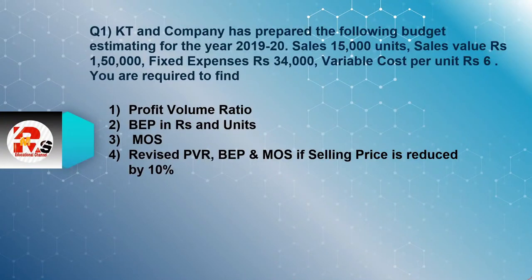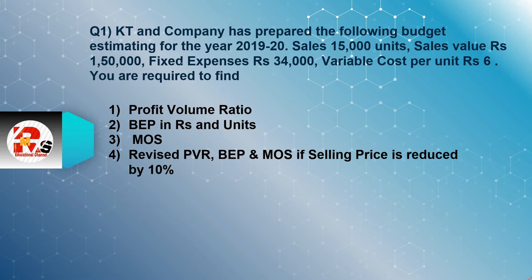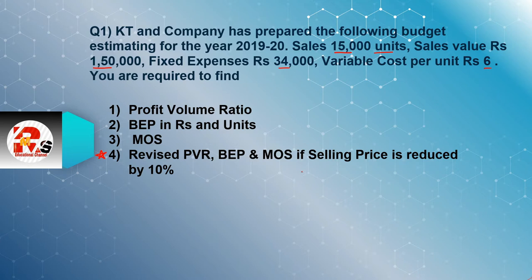Before reading the question, let's see how you know that units information is given. We will read the question carefully. KT and Company has prepared the following budget estimate for the year 2019-20. Sales: 15,000 units, sales value: 1,50,000, fixed expenses: 34,000, variable cost: 6,000 per unit. You are required to find the profit volume ratio, BEP in rupees and units, margin of safety, and revised figures.